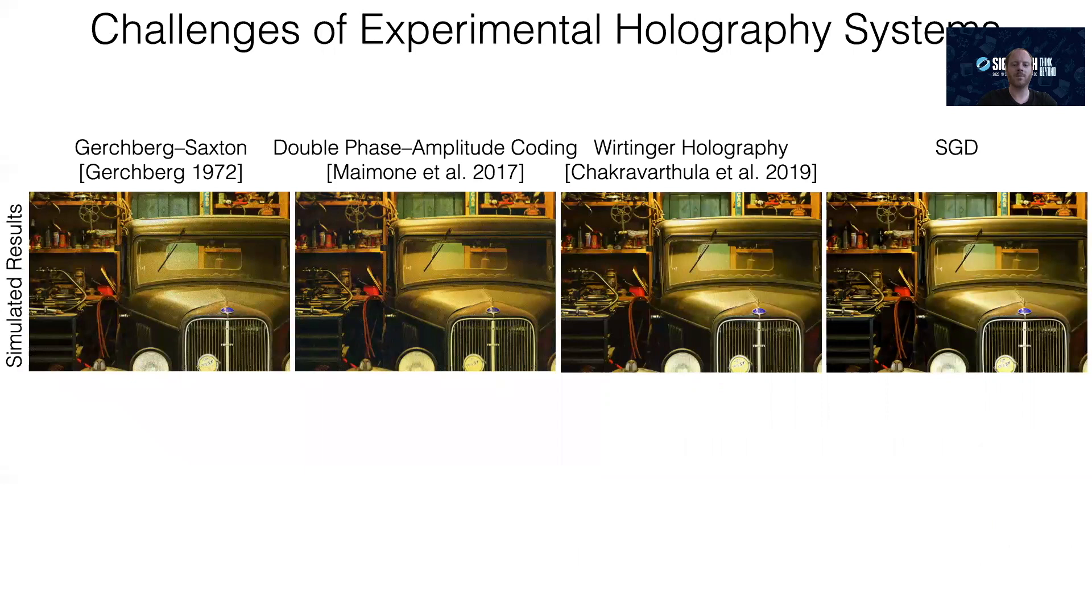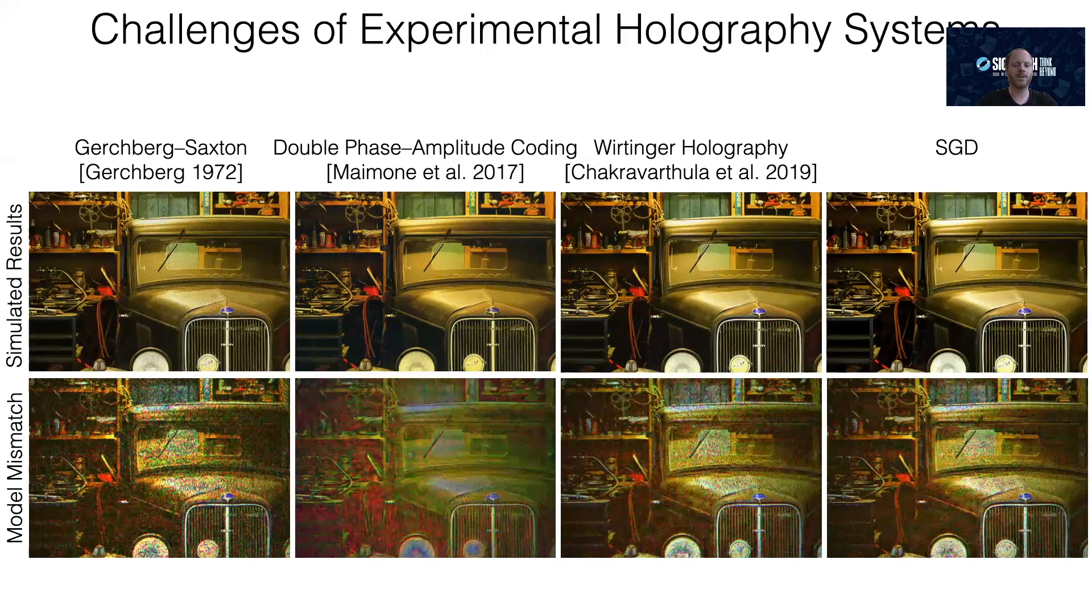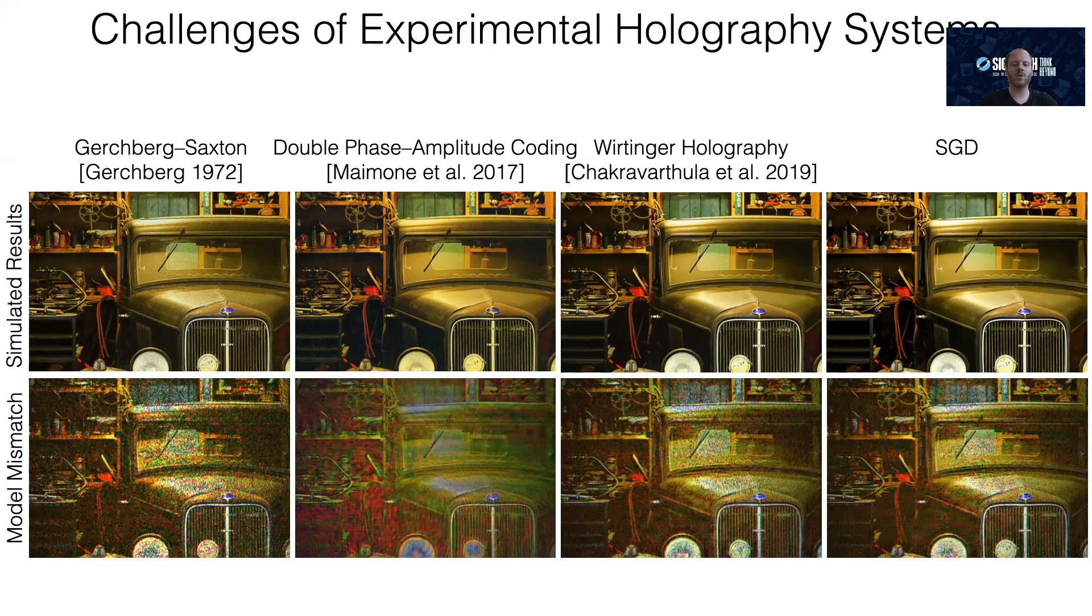To test this algorithm and compare it to alternatives, we ran the simulation. All methods look very good, although Gerchberg-Saxton is always a little bit noisy, and if you look closely, SGD is actually the best. This simulation assumes that the free space propagation model that we use for optimizing the phase pattern is the same as that used for simulating the final image. But let's see what happens if we add a small amount of model mismatch between the simulated model and the physical model by introducing a little bit of optical aberration. Well, all methods fail, including SGD.